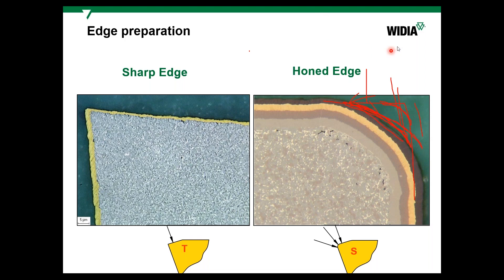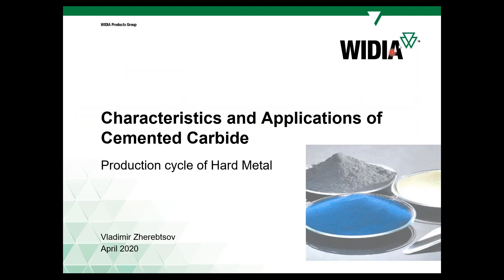We have reached the end of the presentation. A note was added that there is indeed separation of different carbide products during recycling — for example, mining rods and inserts are recycled separately due to differences in grain size and additions. Thank you very much to Vladimir for guiding us through today's presentation, and thank you all for attending. You will receive a recording link by email. Have a good day.